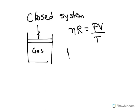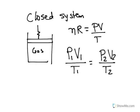So since these are constants, we can state that pressure 1, volume 1 over temperature 1 is going to be equal to pressure 2, volume 2, temperature 2, and this is only working when we have a closed system.